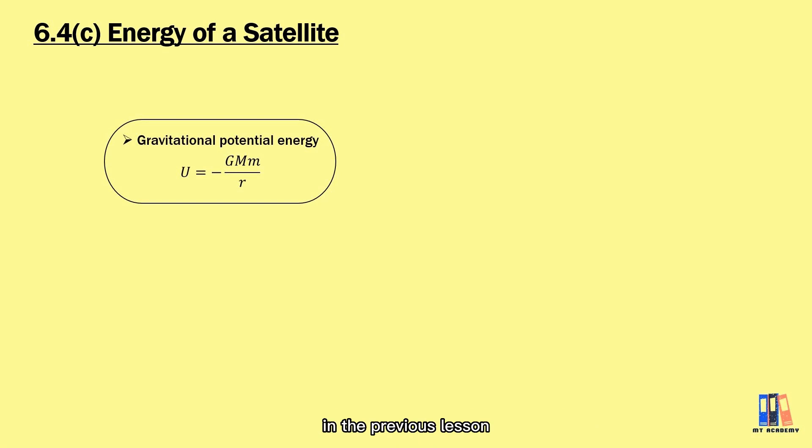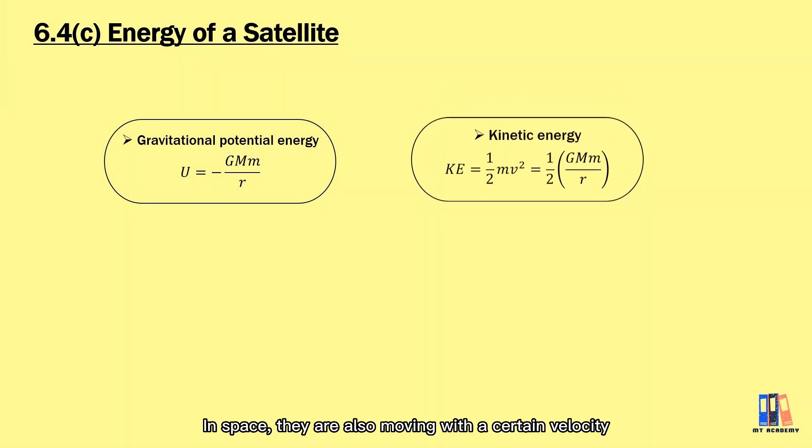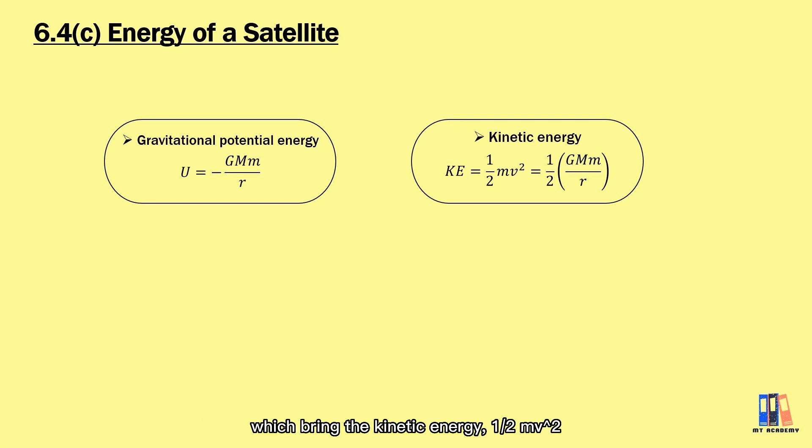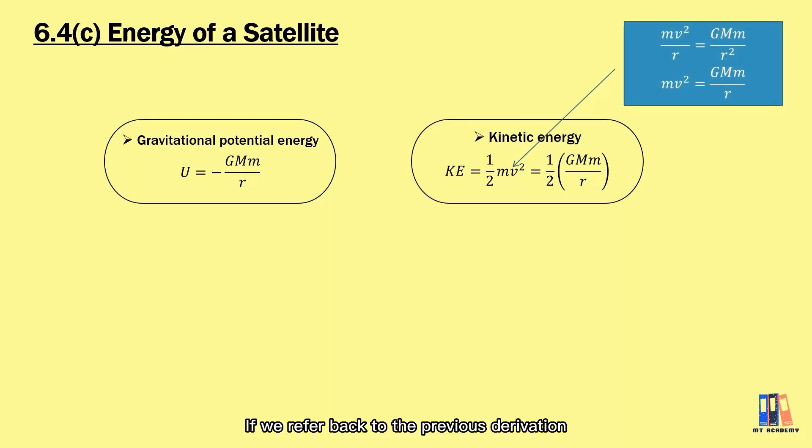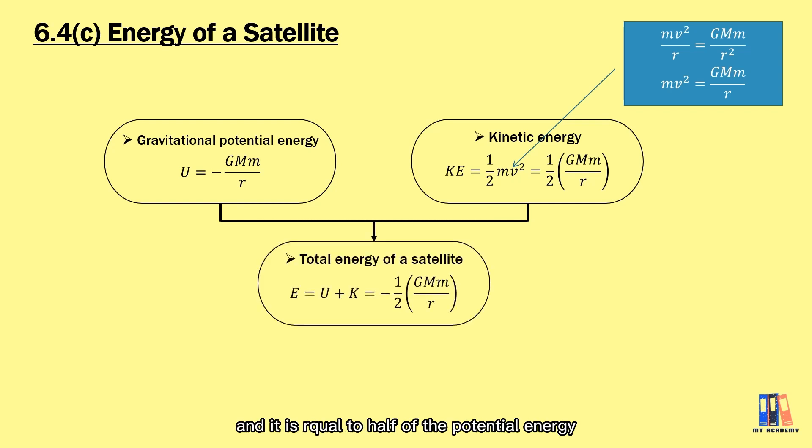Next, we are going to talk about the energy of satellites. We have learned about the potential energy of a satellite in the previous lesson. In space, they are also moving with a certain velocity which brings the kinetic energy half mv². If we refer back to the previous derivation, we also can express kinetic energy as half of GMm over r. To cut it short, satellite in space consists of potential energy and also the kinetic energy. The total energy could be derived, and it is equal to half of the potential energy as you can see from the derivation.